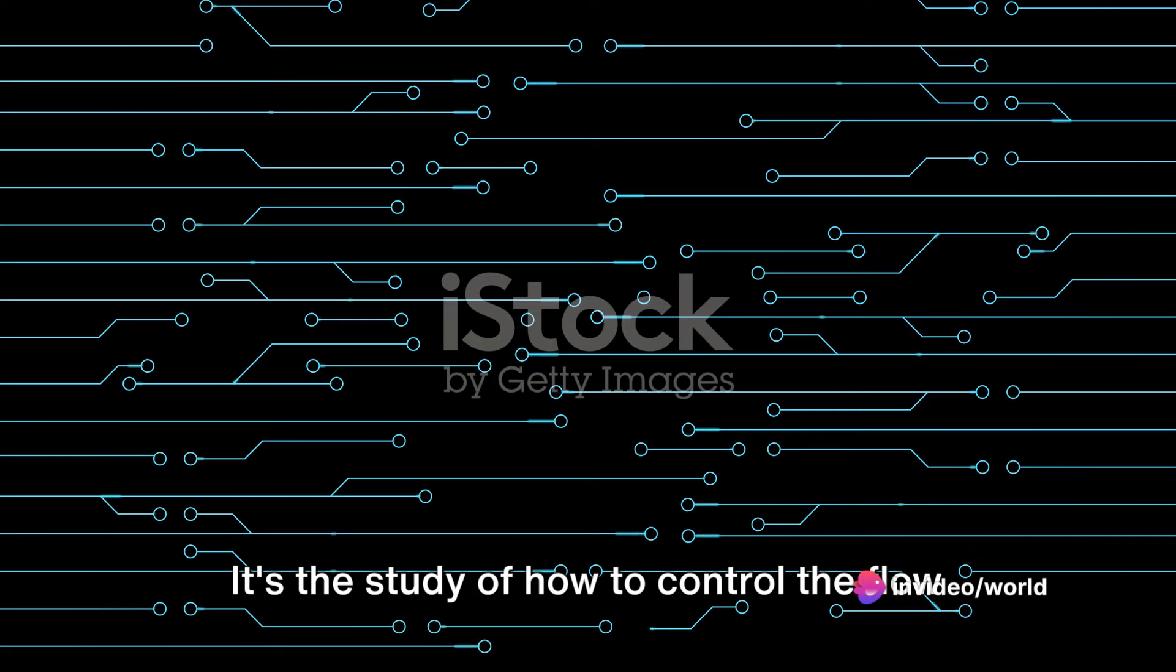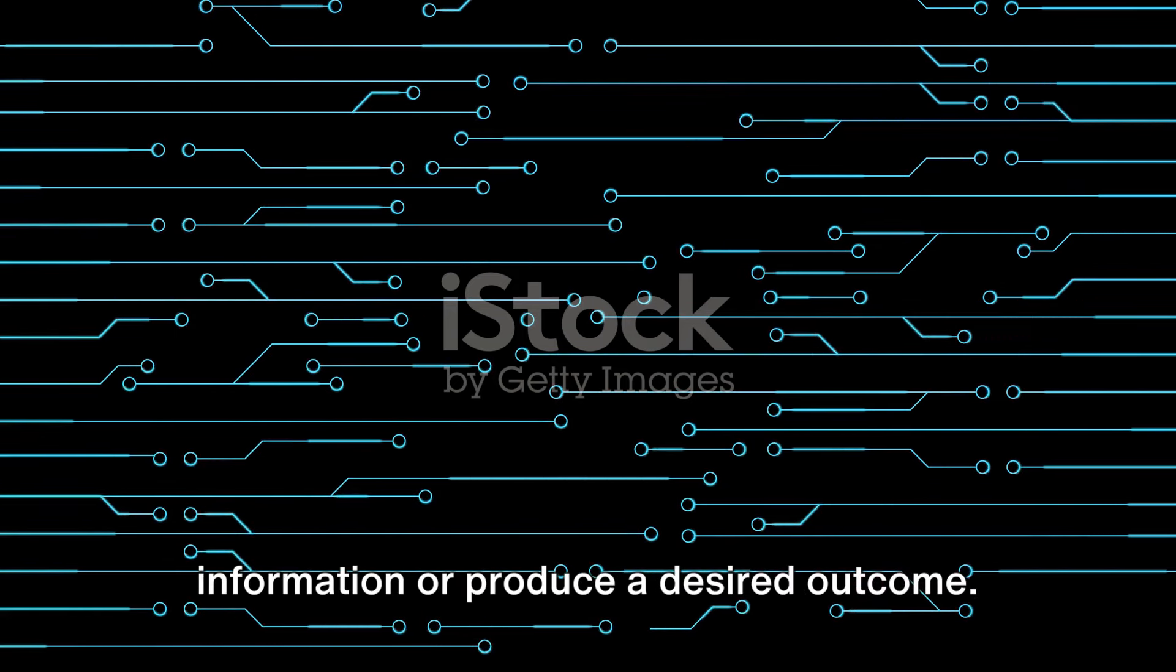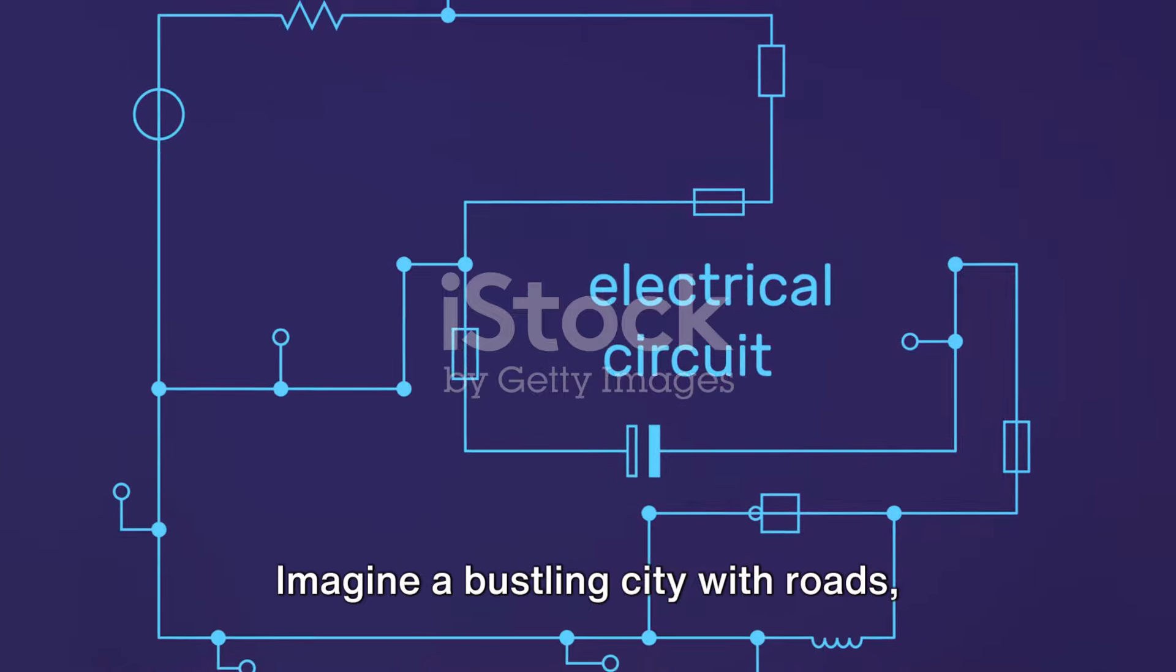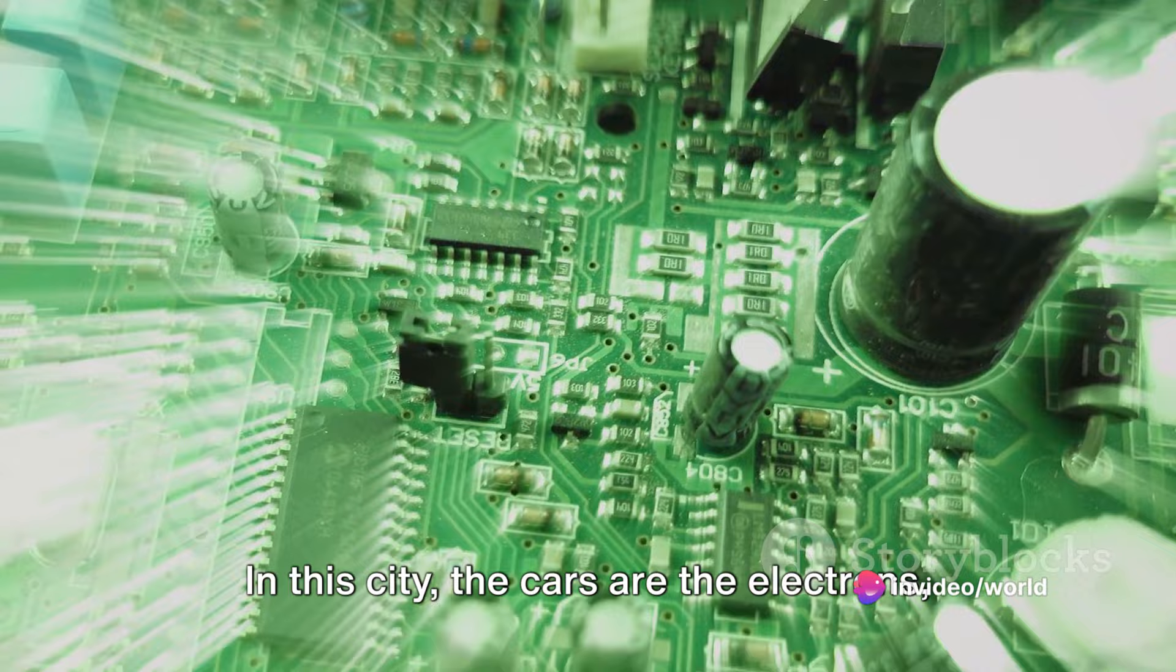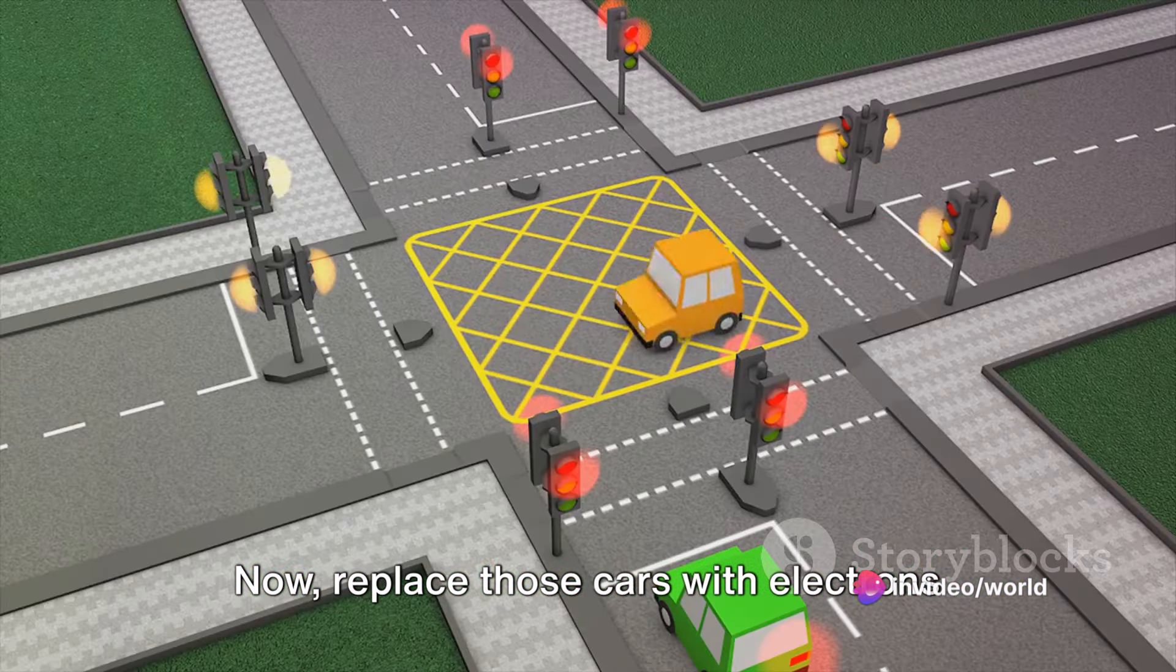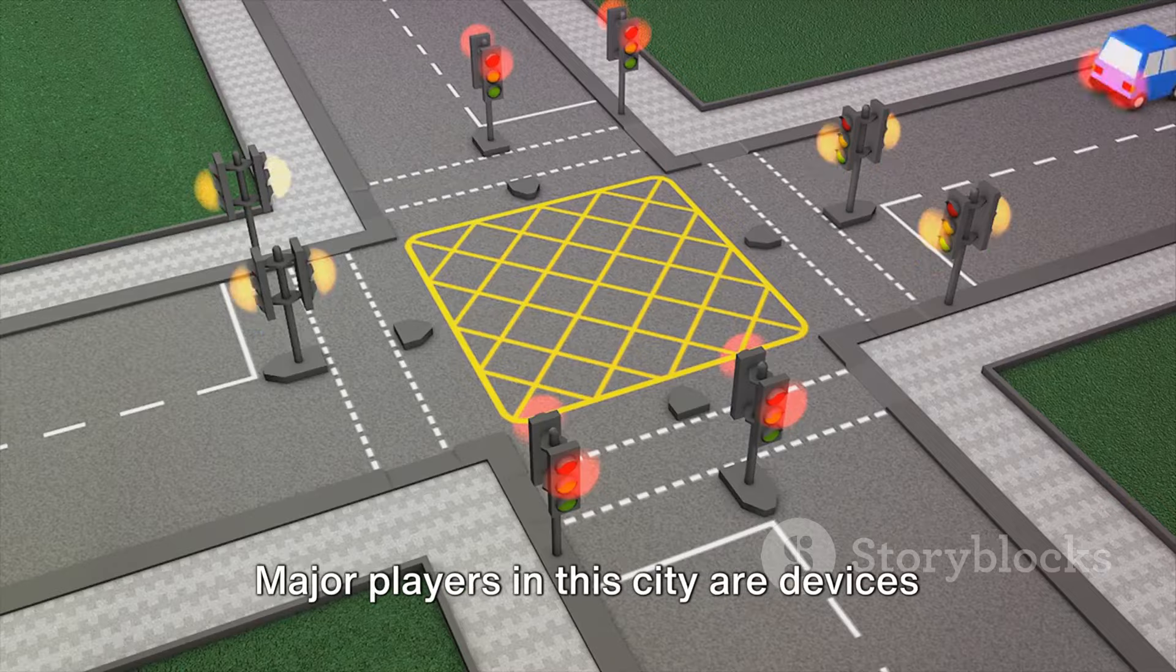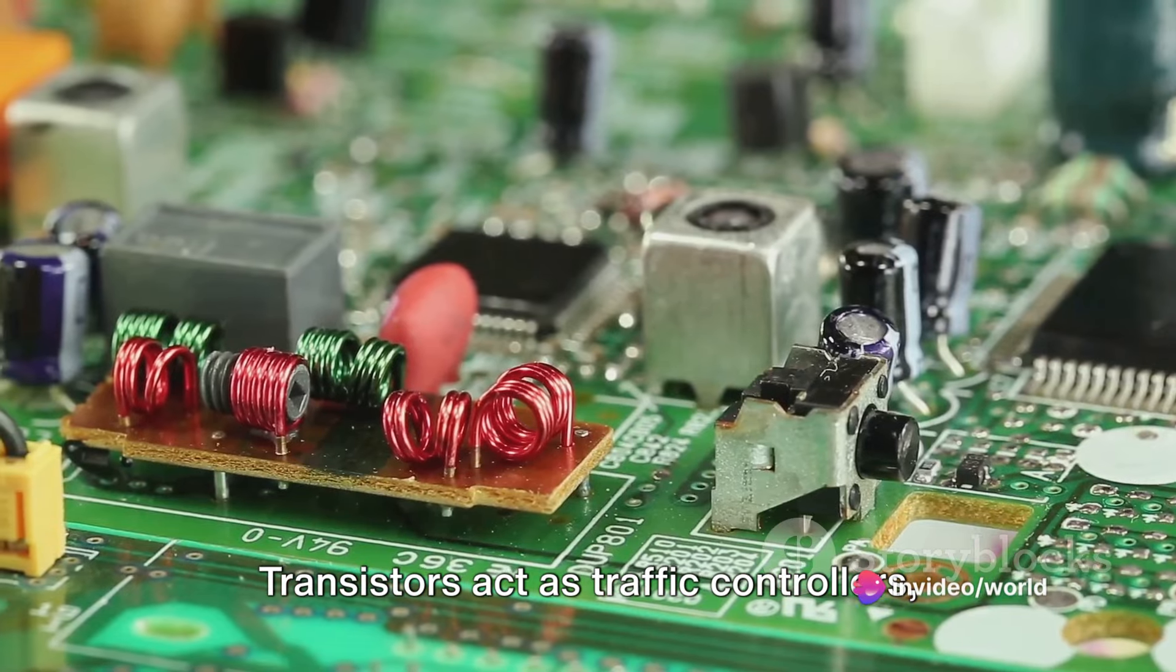But what exactly is electronics? At its core, electronics is a branch of science that delves into the behaviors and effects of electrons. It's the study of how to control the flow of these electrons to manipulate information or produce a desired outcome. Imagine a bustling city with roads, highways, and intersections. In this city, the cars are the electrons, and the roads are circuits. Now, replace those cars with electrons and the roads with conductors, and you have a basic electronic system.